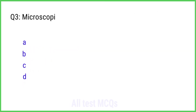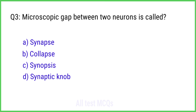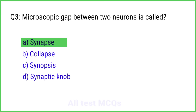Question No. 3. Microscopic gap between two neurons is called? The right answer is Option A: Synapse.